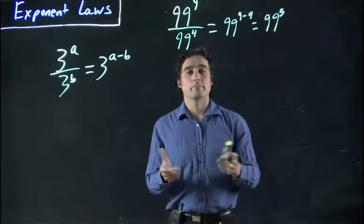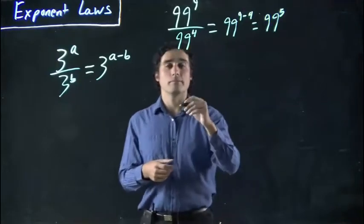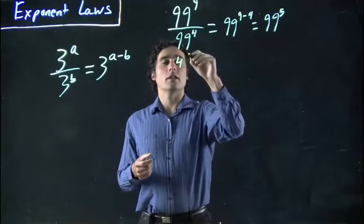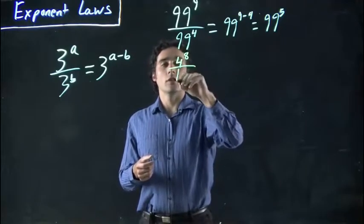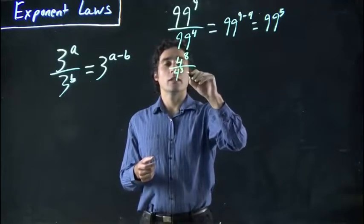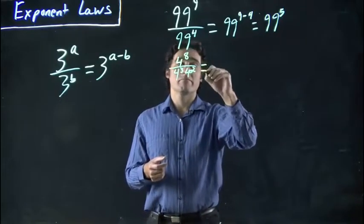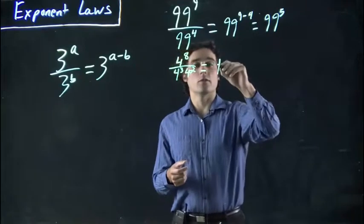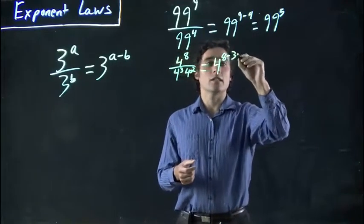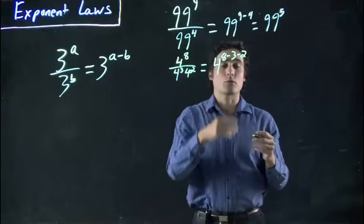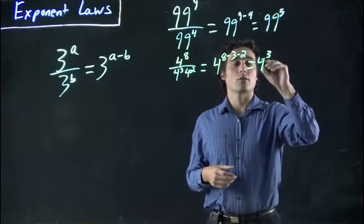Great. Well, what if there's two numbers on the bottom? Let's go with 4 to the 8 over 4 to the 3 and 4 to the 2. Well, again, what we're going to do is 4 to the 8 minus 3 minus 2. Both are dividing the top one, so we subtract both. This would be 4 to the 3.